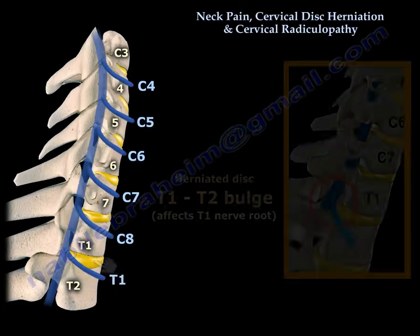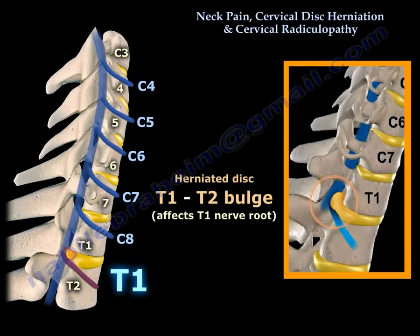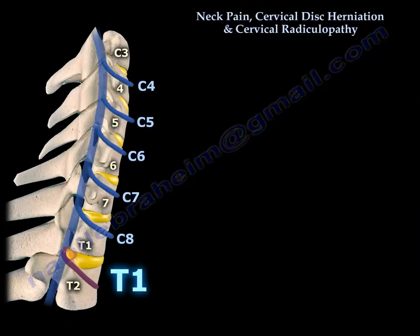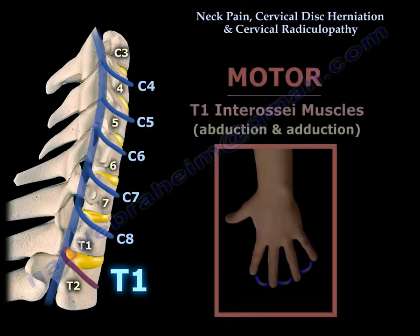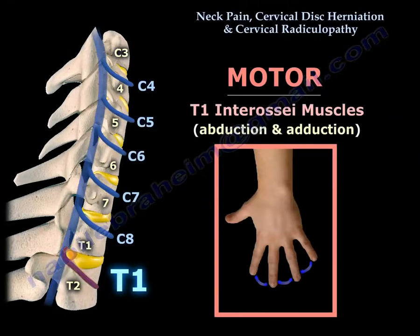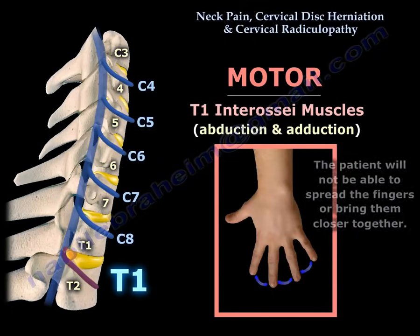Disc herniation between T1 and T2 will affect the T1 nerve root. The area of sensation affected can be seen on the diagram. The motor power will involve the interossei muscles — abduction and adduction — and the patient will not be able to spread the fingers or bring them closer together.